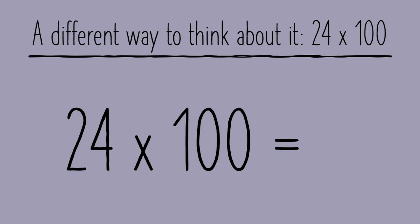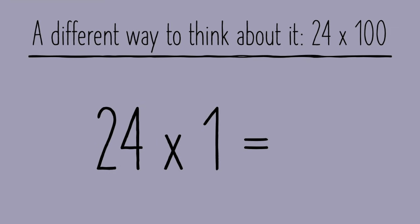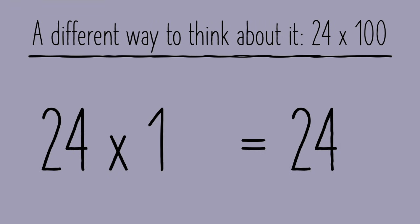The same thing works for 100. If we start with 24 times 100, we can ignore the zeros while we do our calculation. Our equation becomes 24 times 1. We can easily calculate that and know that 24 times 1 equals 24, and then add the zeros back in at the end.